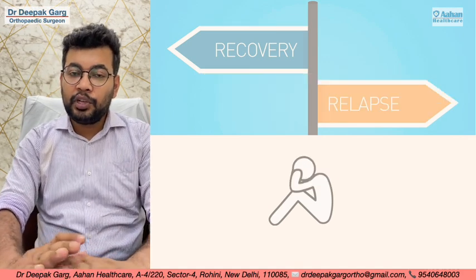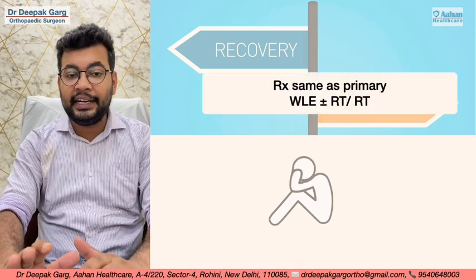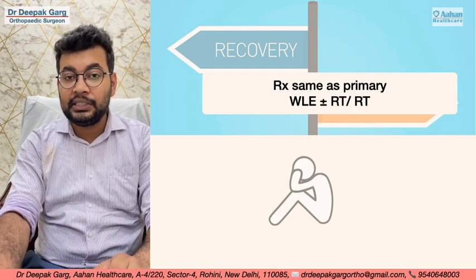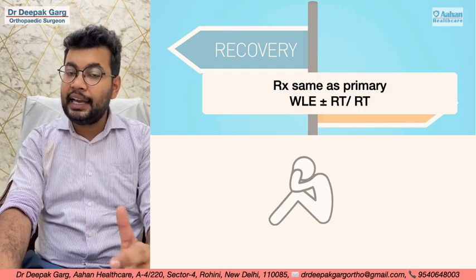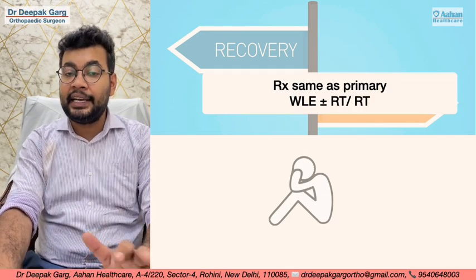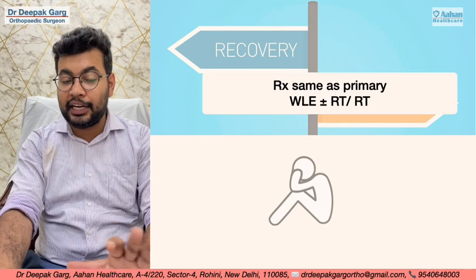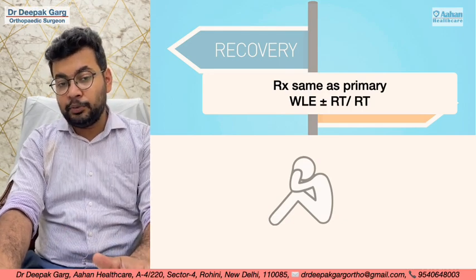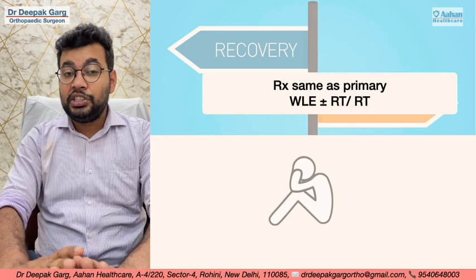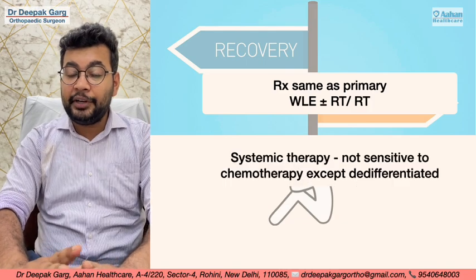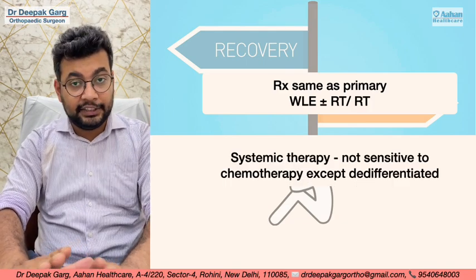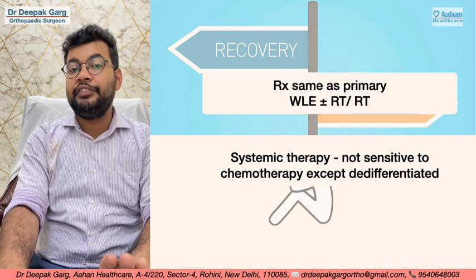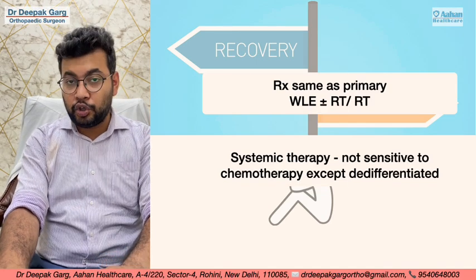The treatment of choice for recurrence is again wide local excision with adequate margins. RT can be given; it is again radio-resistant but can be given for large or unresectable tumors. Regarding chemotherapy, Chordoma is not sensitive to chemotherapy agents except de-differentiated Chordoma.